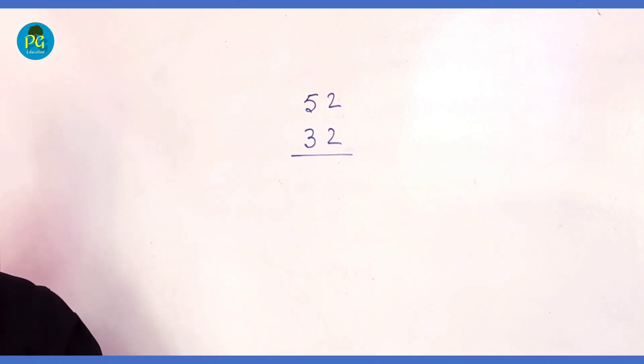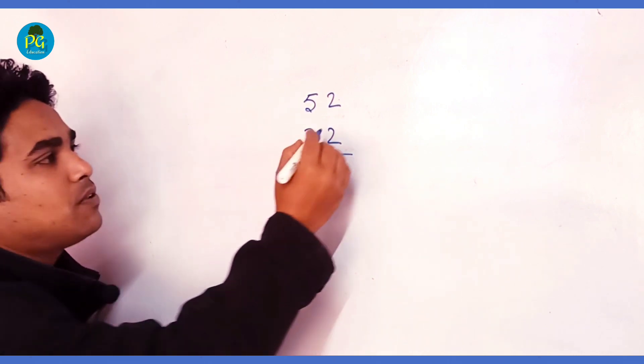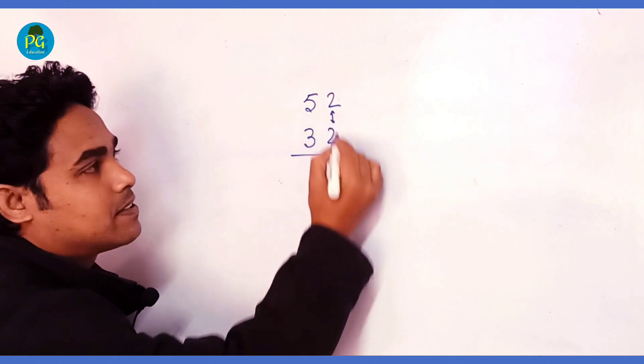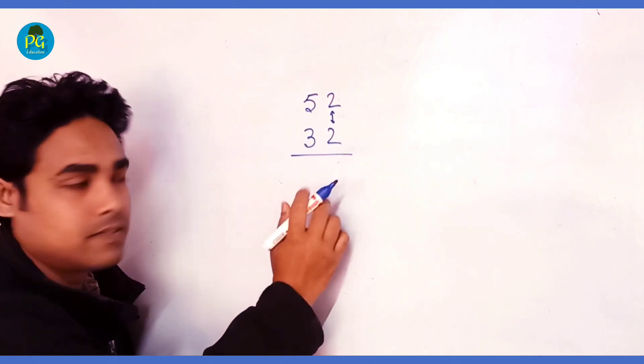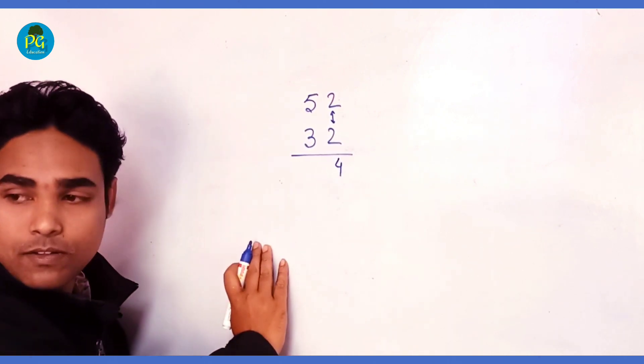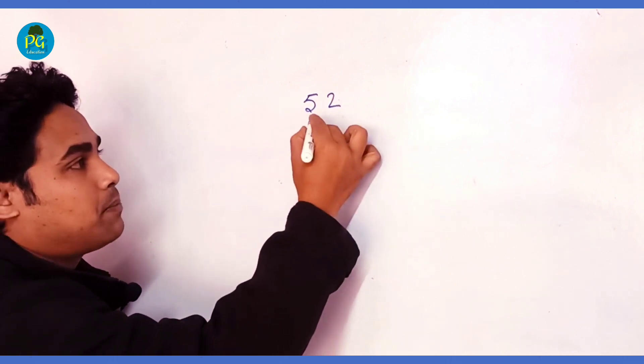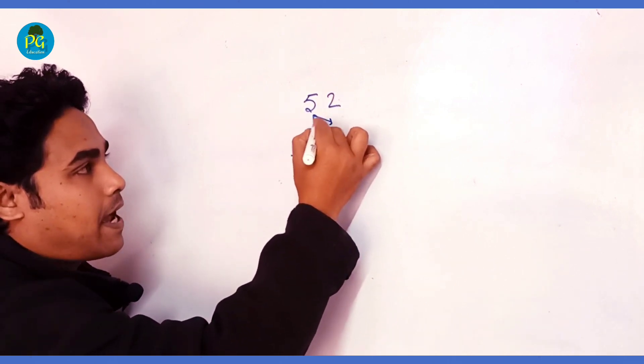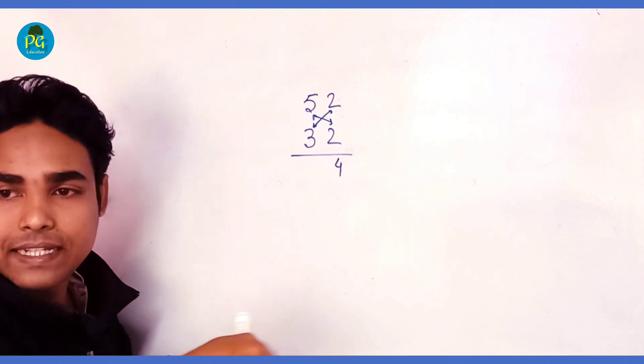Let us understand the process. First we will multiply this two-digit. 2 times 2 is 4, write it down. Now we will multiply this two-digit and this two-digit and we will add them up.